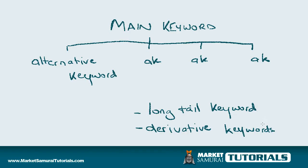The same thing applies to derivative keywords. '3-day detox' might not be just the main keyword — you might also be looking at '3-day detox plans.' These are nothing directly related to the exact phrase but are just another word or phrase for detox, such as health detox, health plans, or diet plans. Those are what we call derivative keywords.